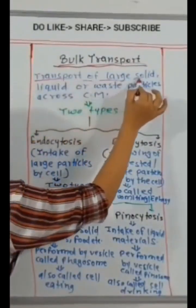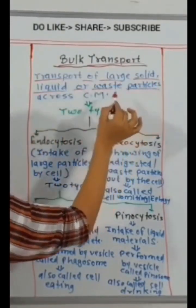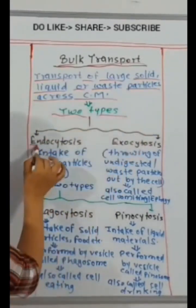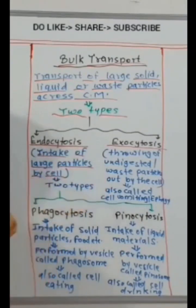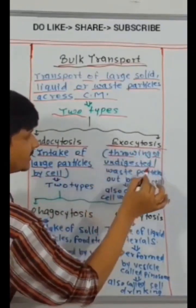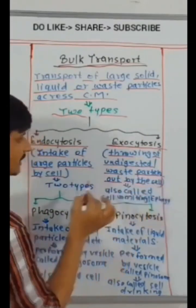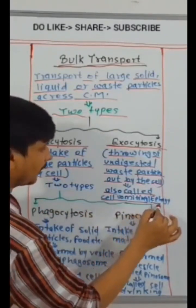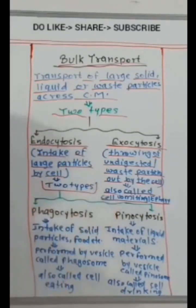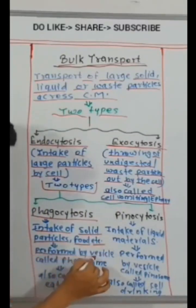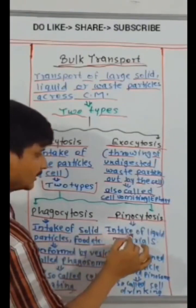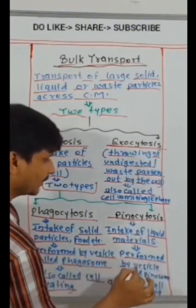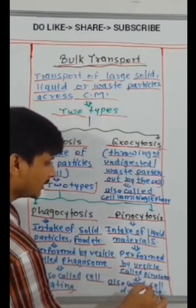Bulk transport: transport of large solid, liquid or waste particles across cell membrane. Two types: endocytosis, exocytosis. Endocytosis, intake of large particles by cell. Exocytosis, throwing of undigested waste particles out by the cell. Also called cell vomiting or effigy. Endocytosis, two types. Phagocytosis, intake of solid particles, food etc. Performed by vesicle called phagosome. Also called cell eating. Pinocytosis, intake of liquid materials. Performed by vesicle called pinosome. Also called cell drinking.